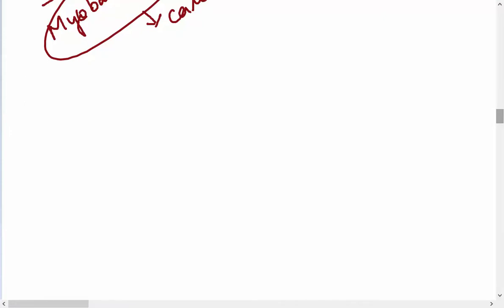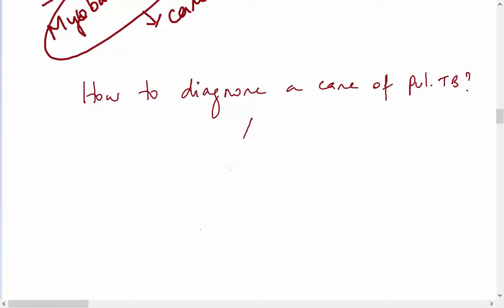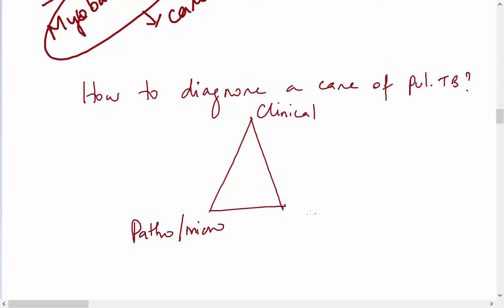We have to diagnose the patient of tuberculosis. To diagnose a case of pulmonary tuberculosis, three things are important: clinical signs, pathological and microbiological investigations, and radiological investigations.